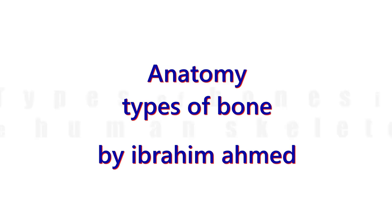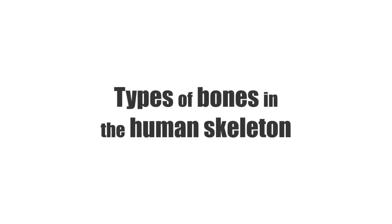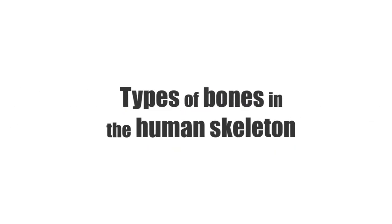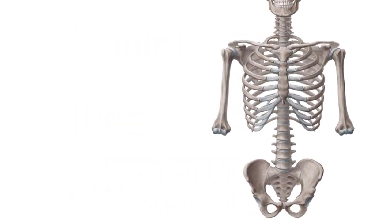We'll explore the different types of bones found in the human skeleton. There are five types that are generally recognized, and they are identified by their forms, either endochondral or membranous, and by their general shape. They are the following.